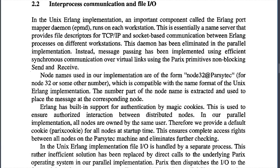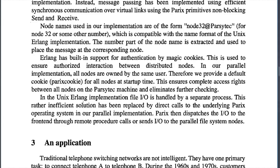Node names used in this implementation are of the form 'node32@parsytec' for node 32 or some other node, which is compatible with the name format of the Unix Erlang implementation. The number part of the node name is extracted and used to pass the message to the corresponding node. Erlang has built-in support for authentication by magic cookies, used to authorize interaction between distributed nodes. In this parallel implementation, all nodes are owned by the same user, so a default cookie is provided for all nodes at startup, ensuring complete access rights between all nodes on the Parsytec machine.